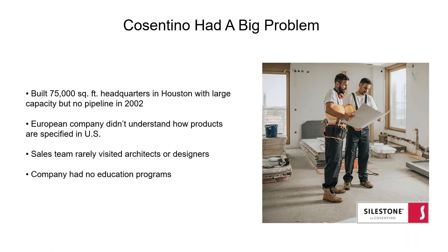Here's a case study. Back in 2002 — about 21 years ago — Constantino built a 75,000 square foot headquarters and distribution plant in Houston, Texas. They're from Spain; they wanted to enter the U.S. market. They had 35 people in the Houston office but couldn't figure out how to reach the architectural market here. They had no collateral, no catalogs or samples. Then they called me because two people had referred them, saying they had no samples going out, no business coming in, and they were about to shut down the U.S. operation.